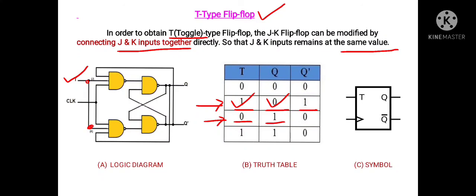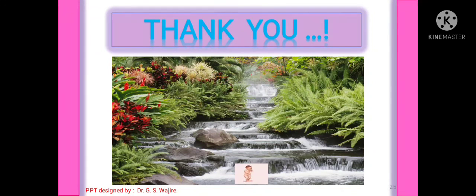The T-type flip-flop is mostly used in computers and electronic systems as a toggle switch — its output alternates between one and zero according to the toggle input. The last figure, Figure C, shows the symbol of the T-type flip-flop, with T input, clock input, main output Q, and complement output Q-bar. This concludes the logic diagram and truth table of the T-type flip-flop. This is the end of Unit Three. Thank you very much.